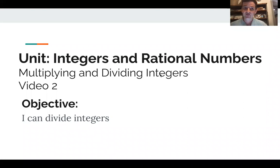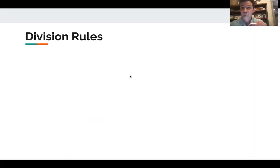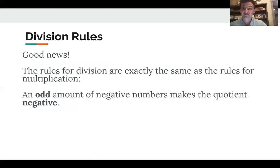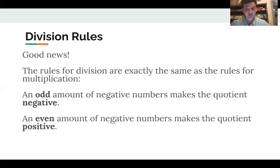Welcome back — this is our second video about multiplying and dividing integers, and now we're going to talk about division. Division is often the most challenging operation, but I've got great news: in this unit dealing with positive and negative numbers, the rules for division are exactly the same as the rules for multiplication. If there's an odd amount of negative numbers, the quotient is negative. If there's an even amount, like if both numbers are negative, the quotient becomes positive.